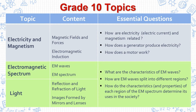Here are the focus areas for grade 10 science for quarter 2. It is divided into 3 topics, namely: electricity and magnetism, electromagnetic spectrum, and light. You are already done with light and electromagnetic spectrum. This time, we are going to focus on electricity and magnetism.